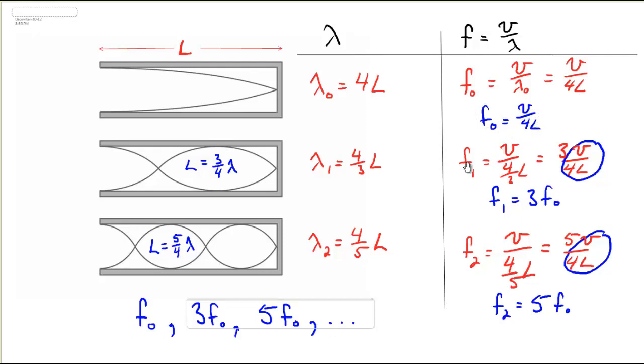Similarly, f1 is velocity over wavelength. So v, and in this case the wavelength is four-thirds L, and I'll plug that in below. I don't like fractions in the denominator, so when I simplify this expression, I get f1 is 3v over 4L. And I've circled v over 4L because this is in fact the same thing as f0. So f1 is 3f0.